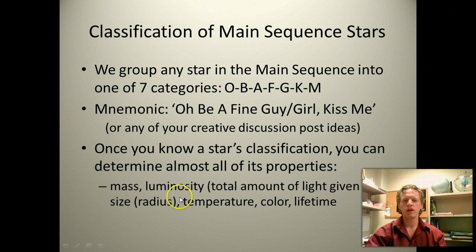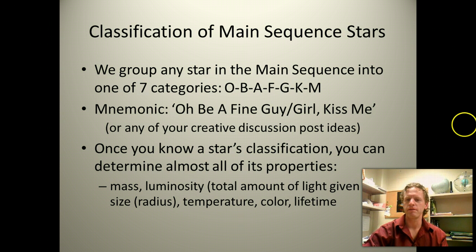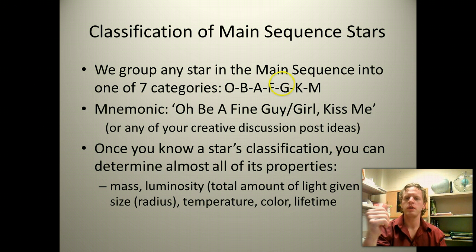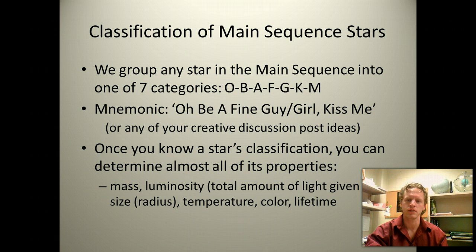Once we know one of the star's properties — its mass, luminosity, size, temperature, color, or lifetime — we can know every other property of that star, as long as it's a main sequence star falling into one of these seven categories. For example, if you know some other star is a G-type star, you'll know it's very similar to our sun, which is also a G-type star. To within 10% or so, all of the stars in a single class are roughly the same.